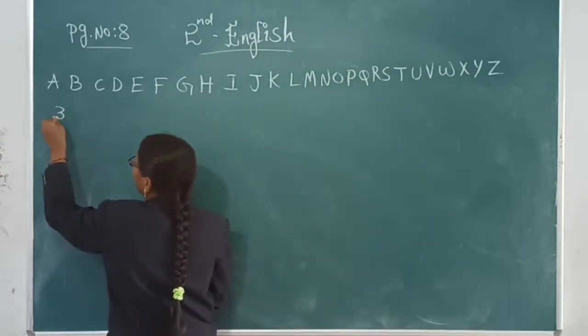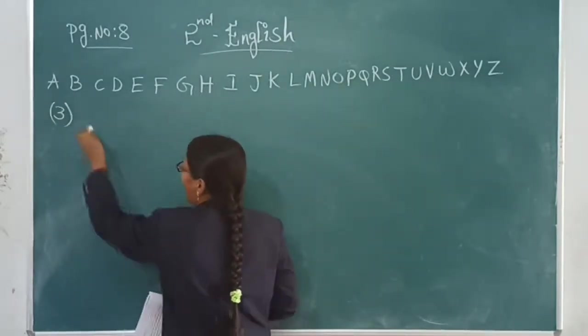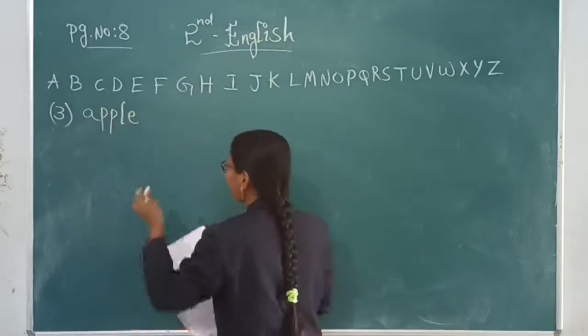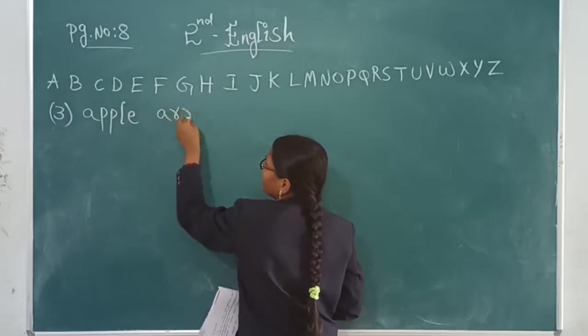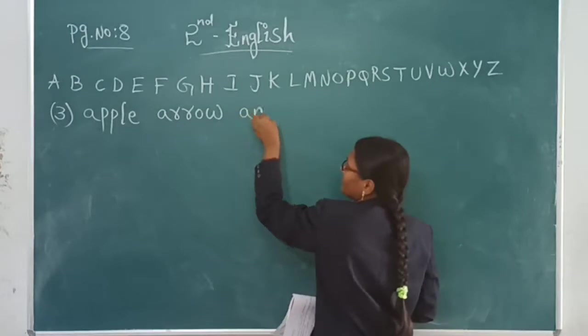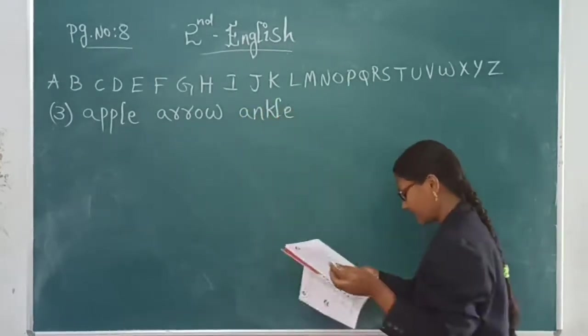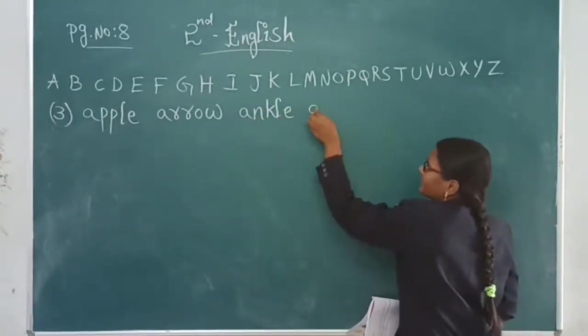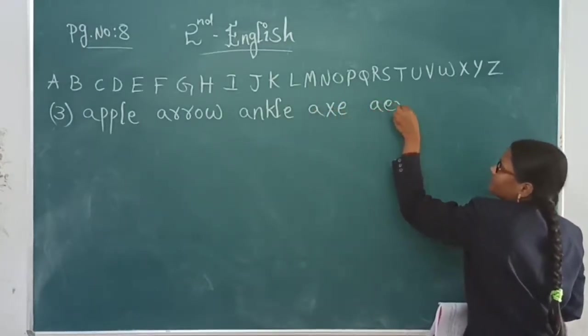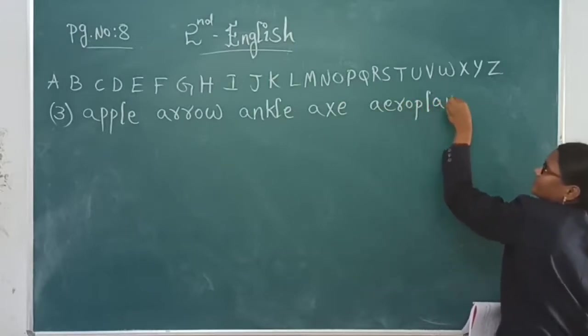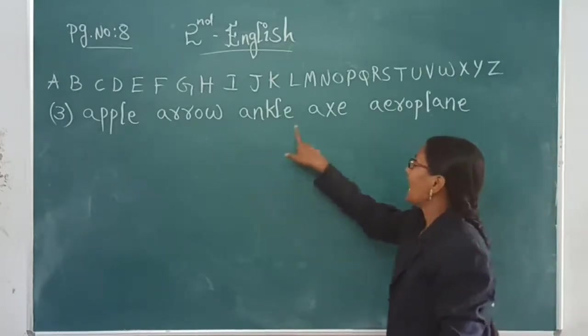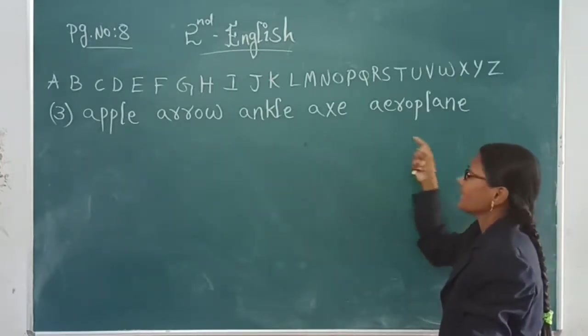What is the third one? Apple. What is the first word? Apple. Arrow. Ankle. Ankle. Axe. Aeroplane. Apple, arrow, ankle, axe, aeroplane.